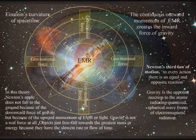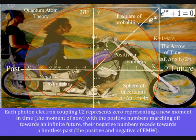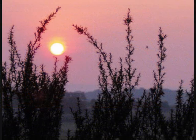This process forms a dynamic curvature and geometry of space-time that the mathematical world is based upon. Each new photon oscillation of light represents zero, representing a new moment in time, the moment of now, with the positive numbers marching off towards an infinite future, their negative numbers receding towards a limitless past, the positive and negative of electromagnetic waves. The physical world is based on this dynamic process.